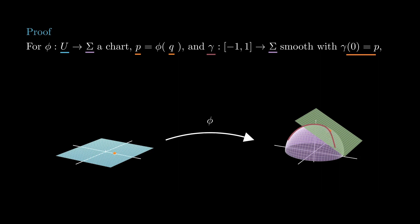Whenever we take a regular curve gamma in sigma with gamma of zero equals p, then by continuity, after restricting the curve to a small interval around zero, we can apply phi inverse to it and get a curve alpha in the uv plane.